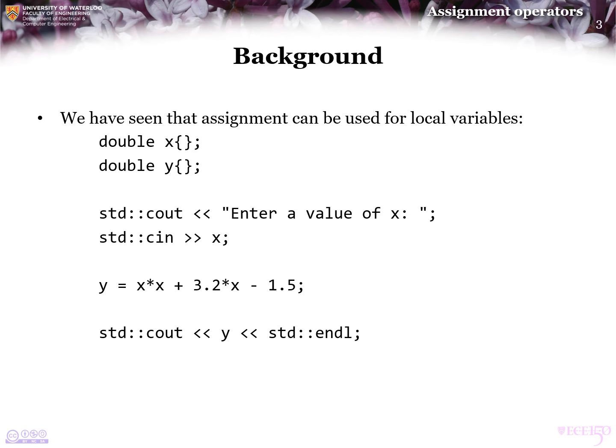We've already seen that assignment can be used for local variables. Here we have two local variables, x and y, both of type double. We ask the user for a value of x, and we get that through the standard console input. We then assign to the local variable y the result of x squared plus 3.2x minus 1.5, and we print that result out.